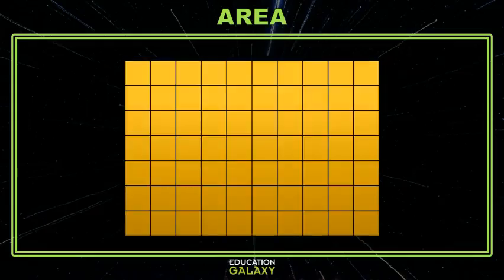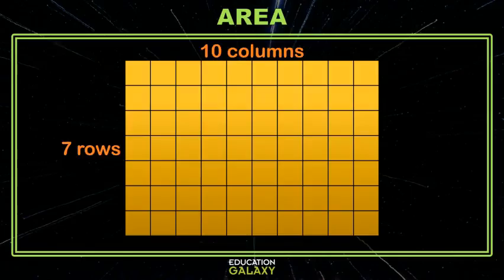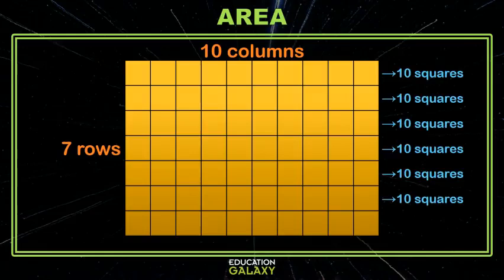So what if we took that wall and chopped it into equal size squares and then see if we can find the total number of squares. Now you might remember when we did arrays that we found out how many rows we had and how many columns we had and then we could find by adding how many squares we have in all. So there'd be 10 in the first row, 10 in the next row, so 10, 20, 30, 40, 50, 60, 70. We'd know we have 70 squares.